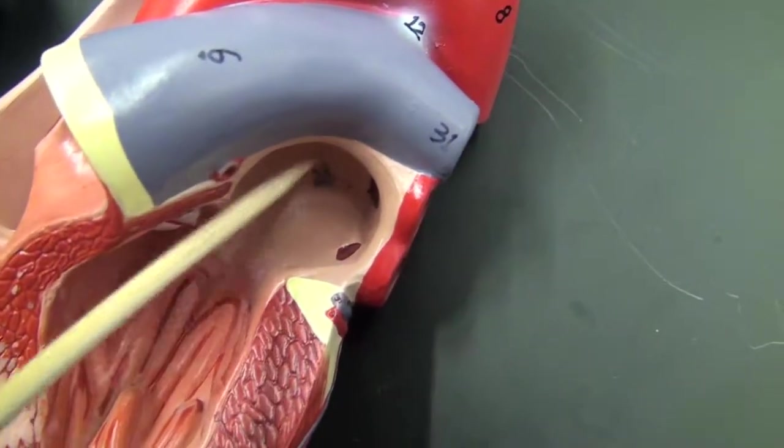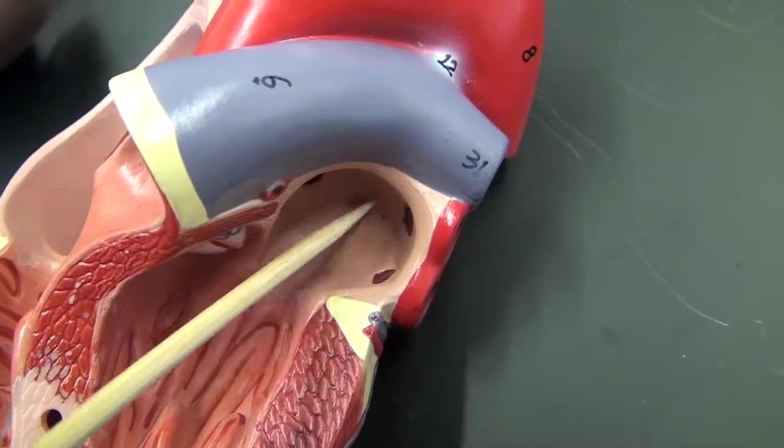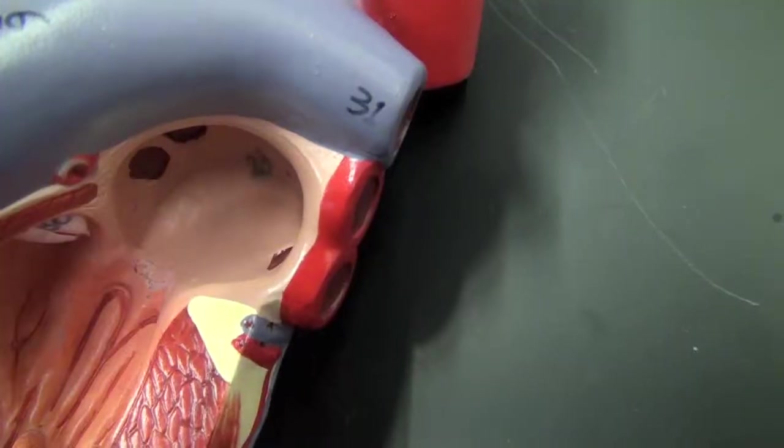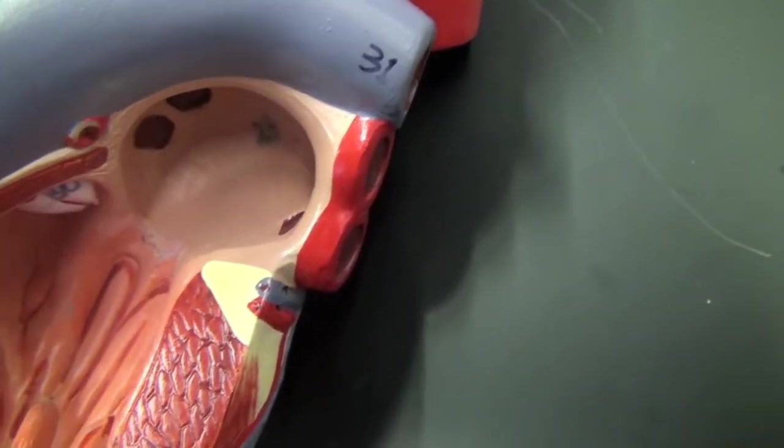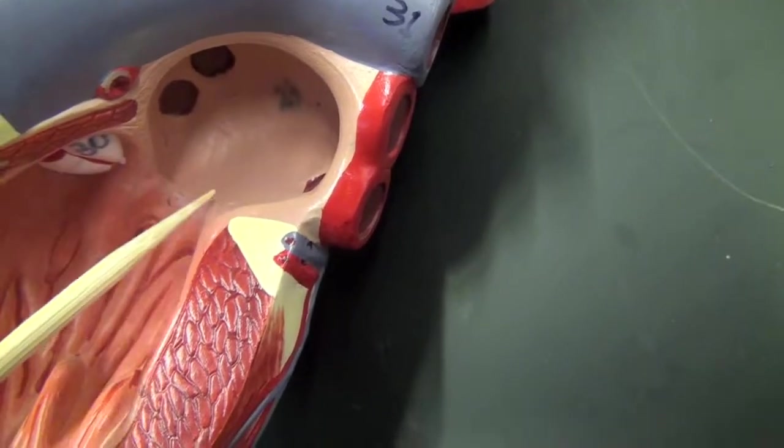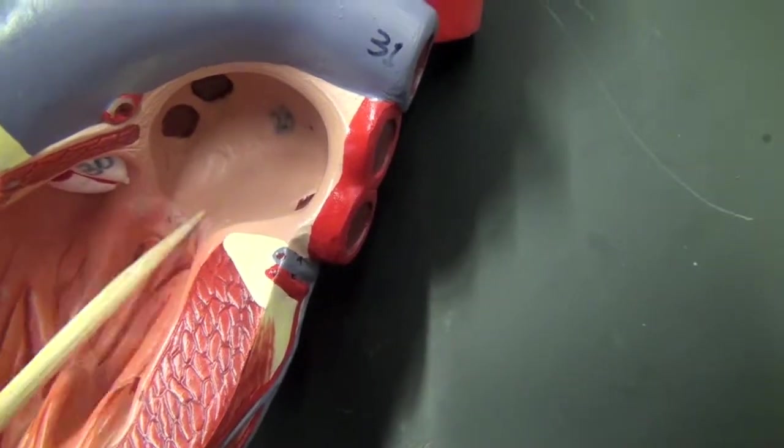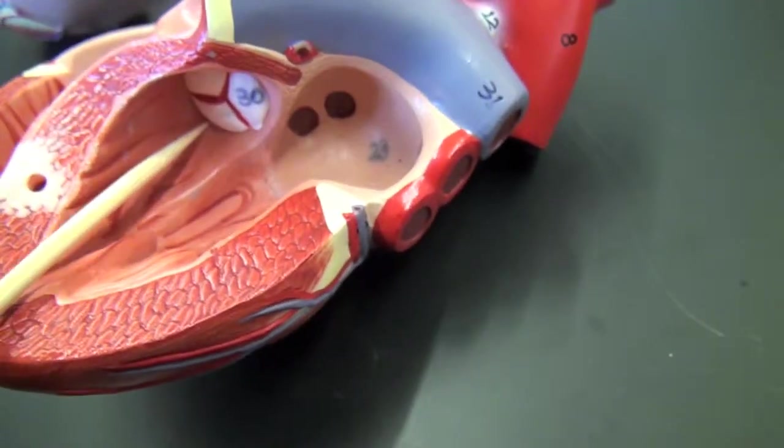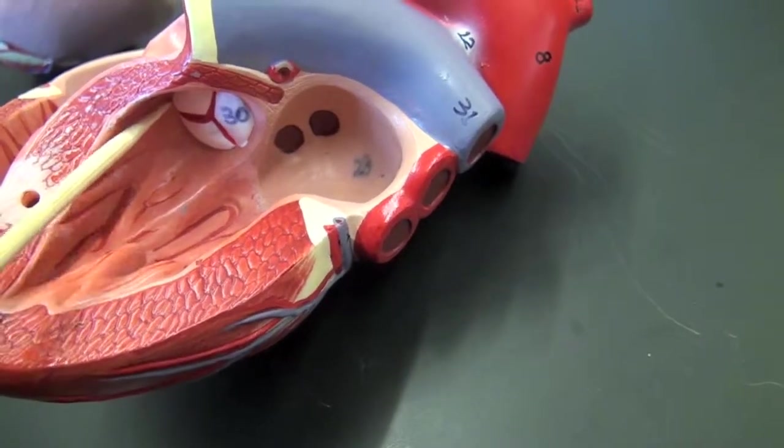This is the left atrium. The valve that separates the atrium and ventricle is the bicuspid valve or the mitral valve. This is the aortic valve.